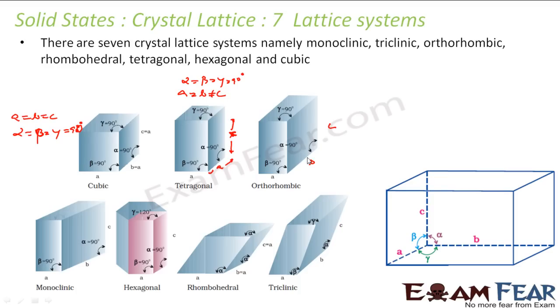In orthorhombic, all the sides are unequal — a is not equal to b is not equal to c — but alpha is equal to beta is equal to gamma is equal to 90 degrees. That is called orthorhombic.